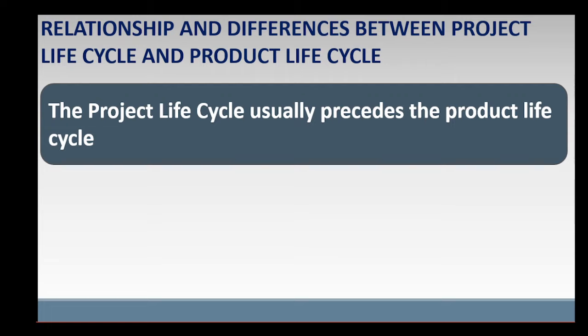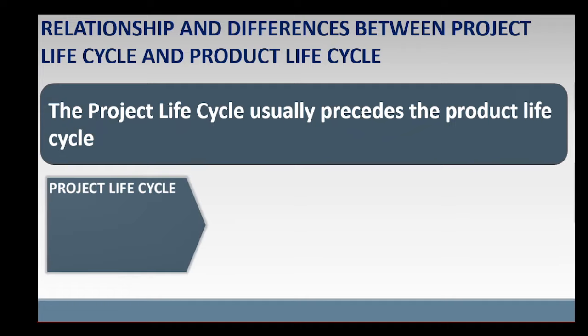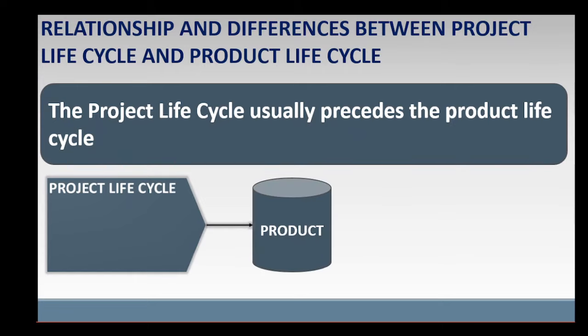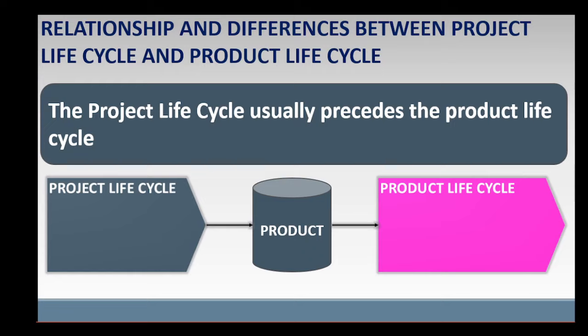So, what are the relationships and differences between project life cycle and product life cycle? The project life cycle usually precedes the product life cycle. That is, a project is first undertaken to create or develop the product, and the project ends before the product life cycle can begin with the introduction of the product. For example, a project must first be undertaken to design and create a product such as a new car, smartphone, or software before the product can be introduced to the market.